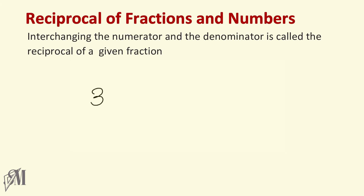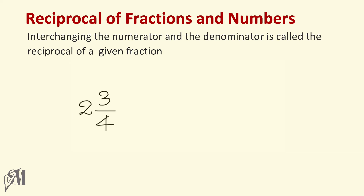Three, as you know, is a whole number. The denominator of any whole number is one. So when we interchange three and one, we get one over three. Two and three over four is a mixed number. To get the reciprocal of a mixed number, first convert it into an improper fraction: two times four is eight, eight plus three is eleven, so it becomes eleven over four. Interchanging gives four over eleven.